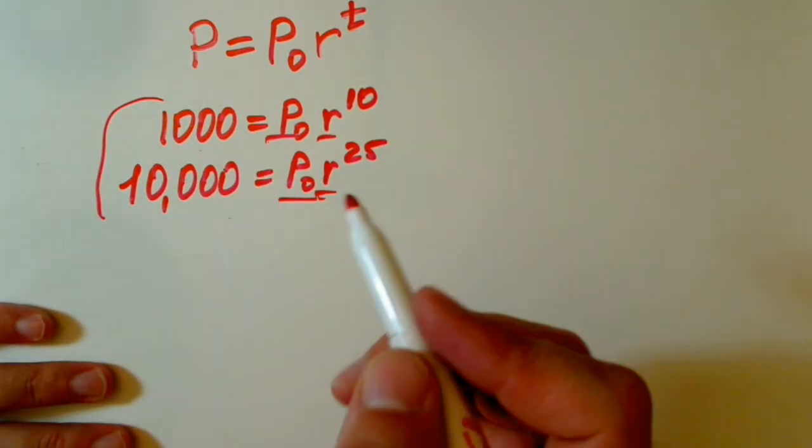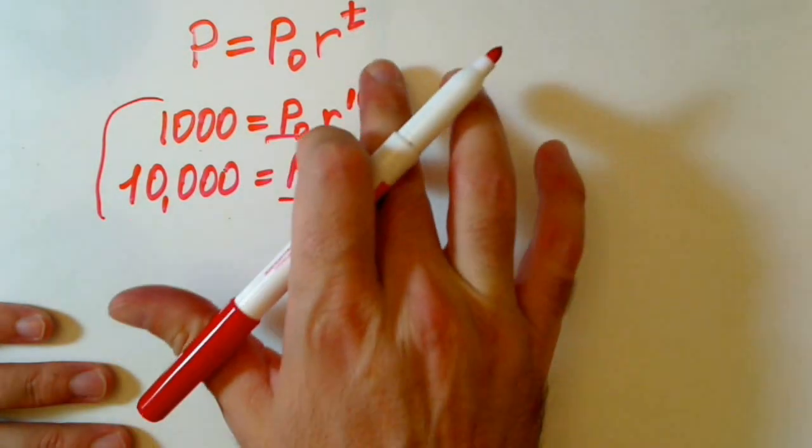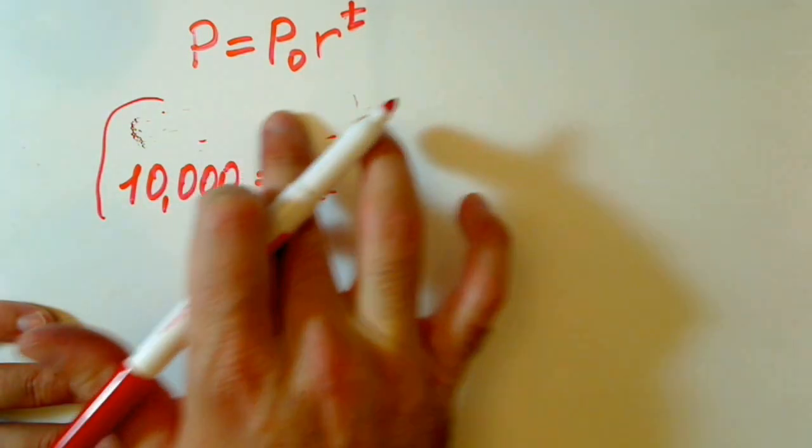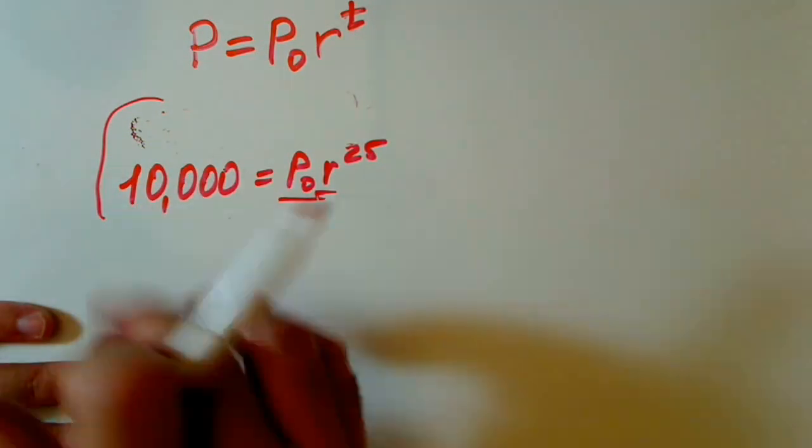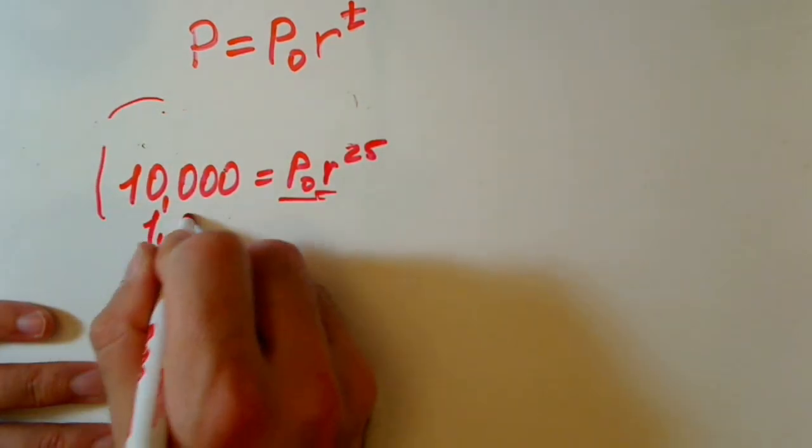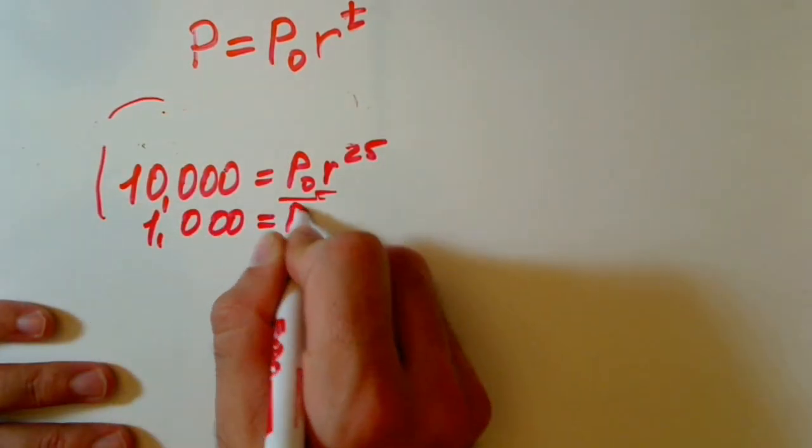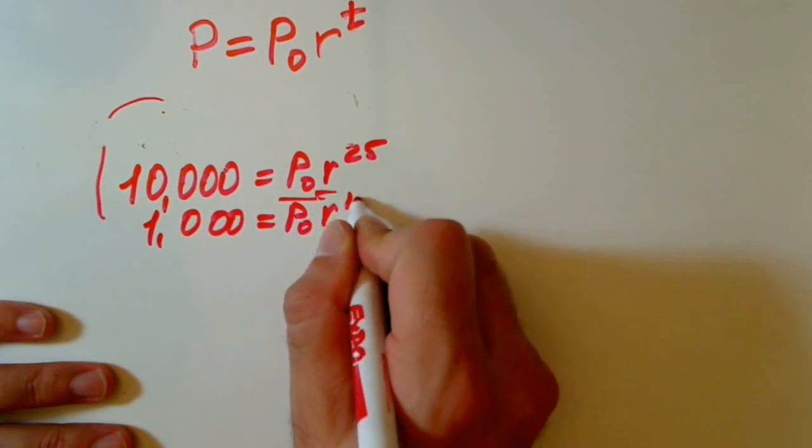And what we can do is divide them. And actually it will be easy if we divide bigger one by smaller one. 1000 equals P₀r to 10.